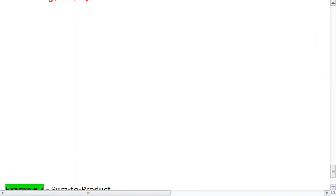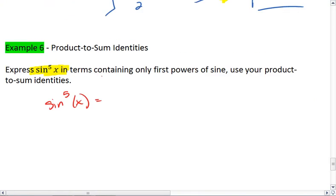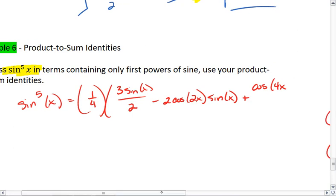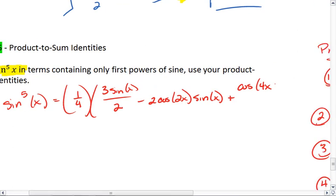All right, so we already know that sine to the fifth x equals 1/4 times 3 sine x over 2 minus 2 cosine 2x sine x plus cosine 4x sine x over 2. Because we only want this in terms of sine, we're going to take out these cosines using our product-to-sum formulas.